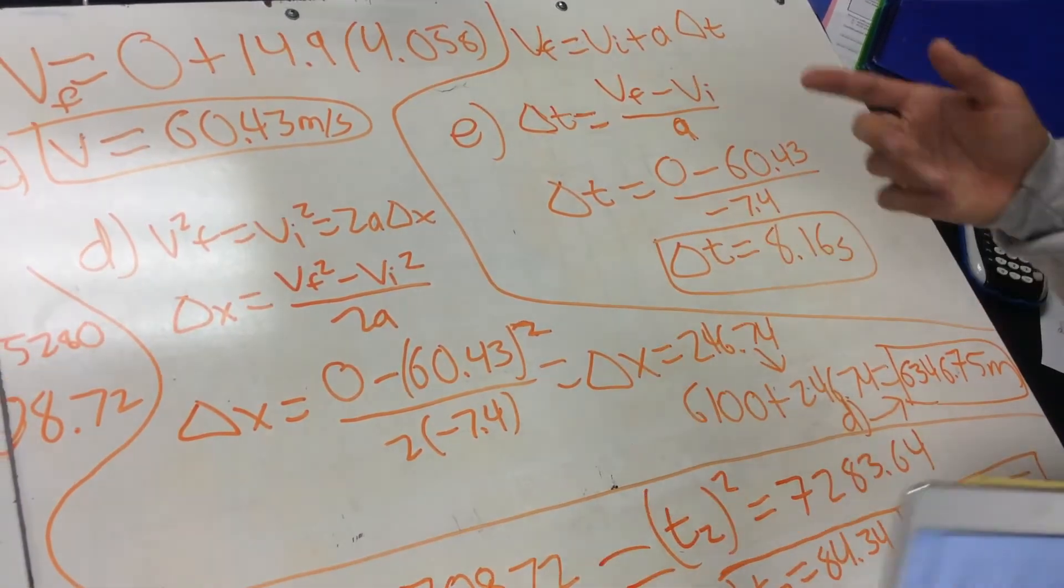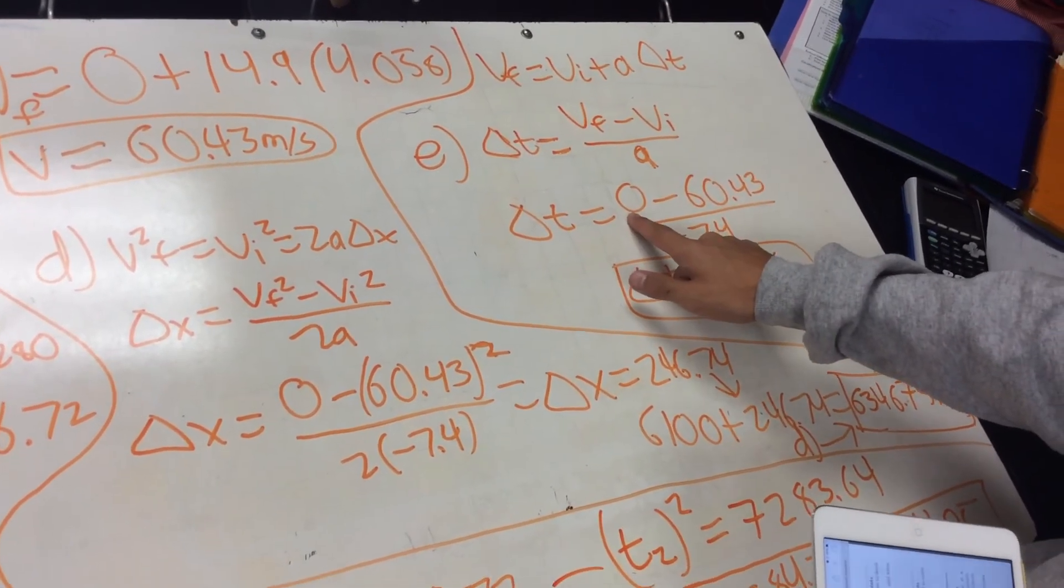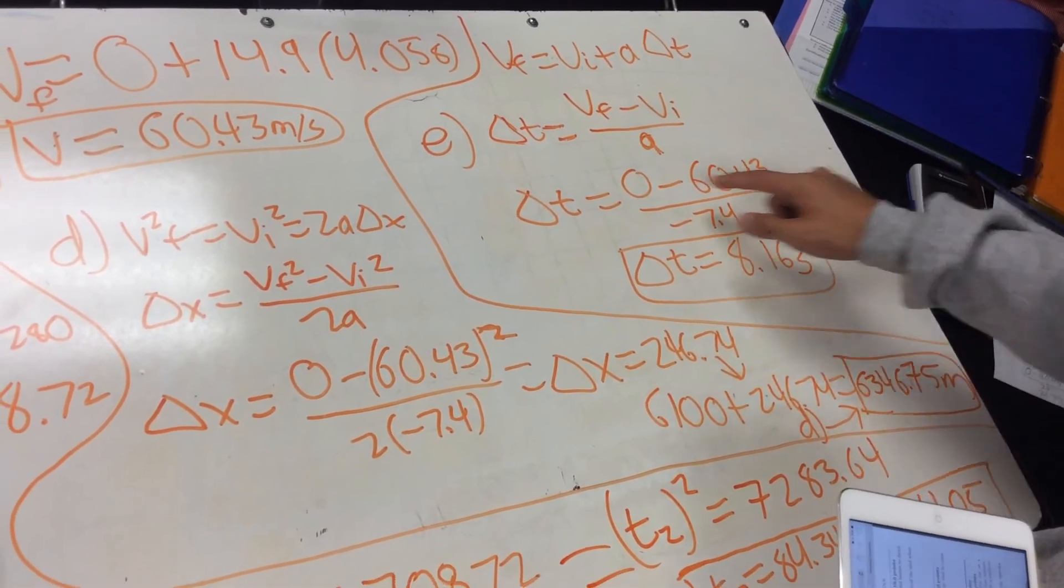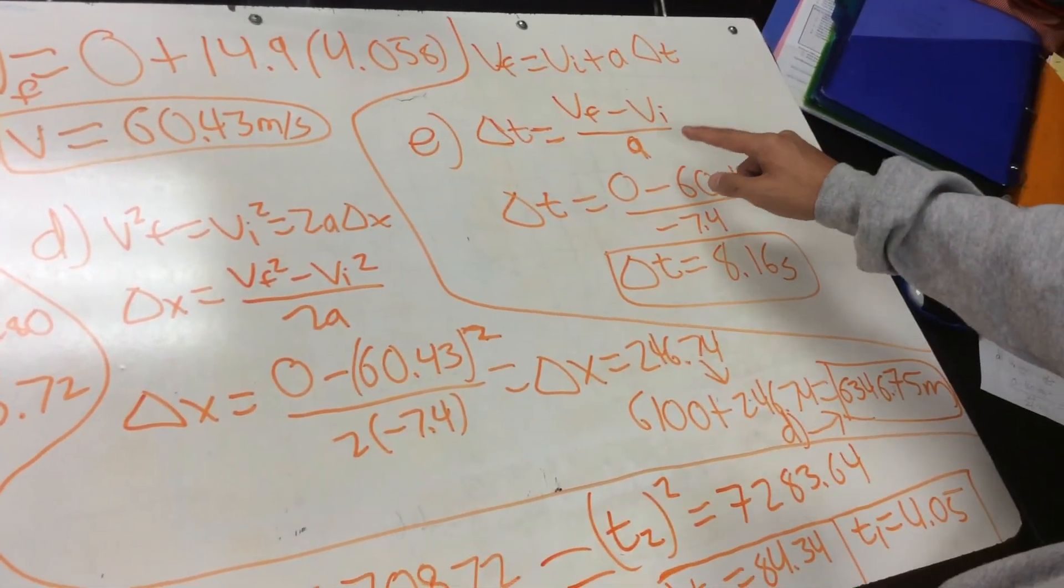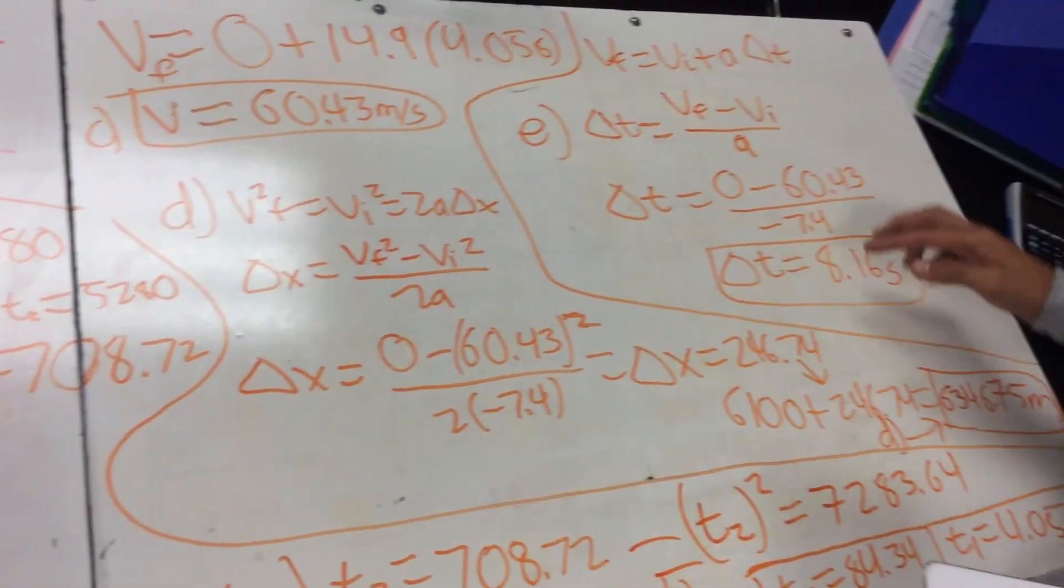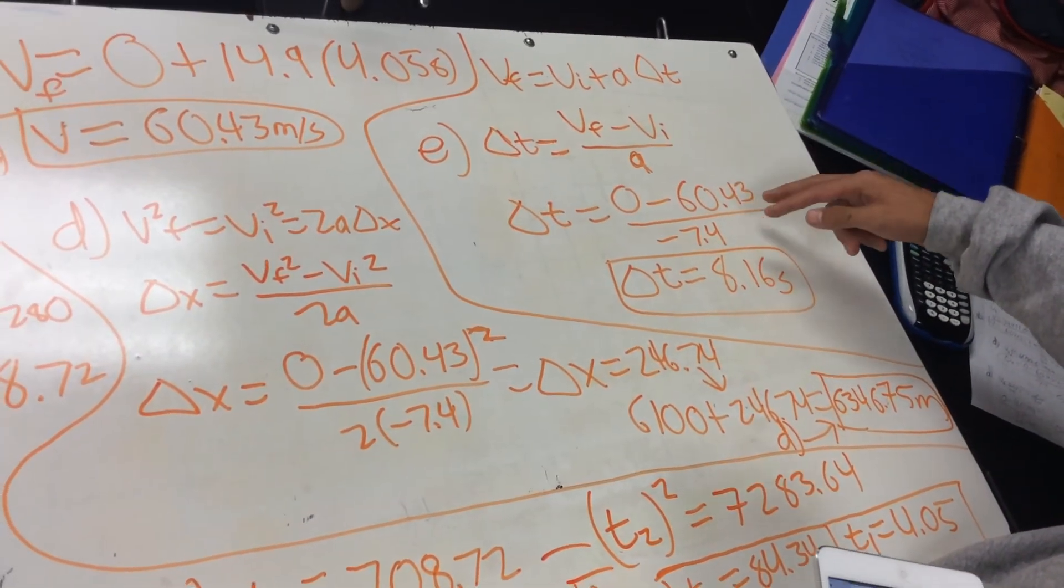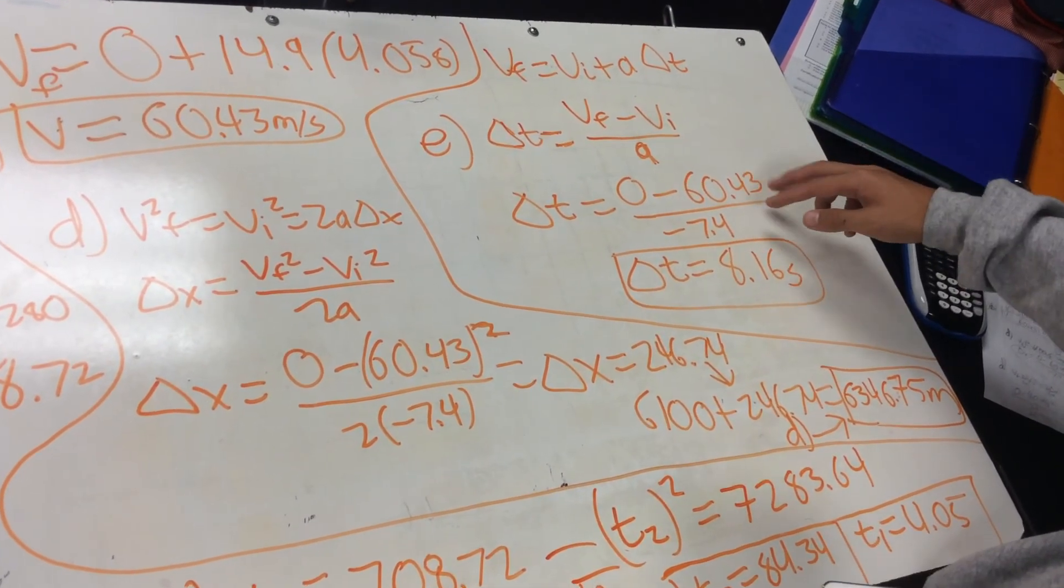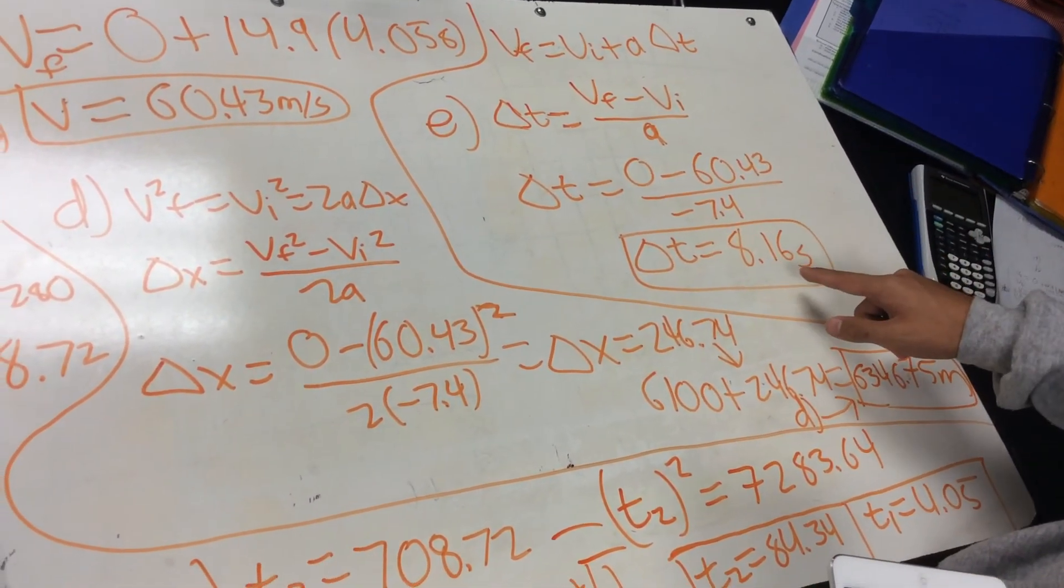So the final velocity is, it comes to rest, so the final velocity is 0. So, the initial velocity is 60.43, like how we calculated over here, and then the acceleration is negative 7.4, like from the earlier problem. And then once you solve that, it's just simple, you just divide, you'll get 8.16 seconds.